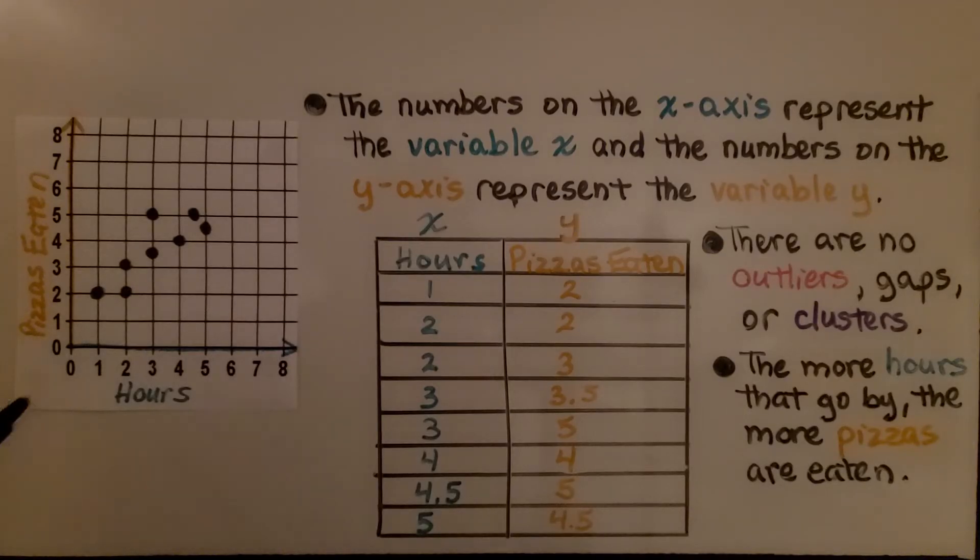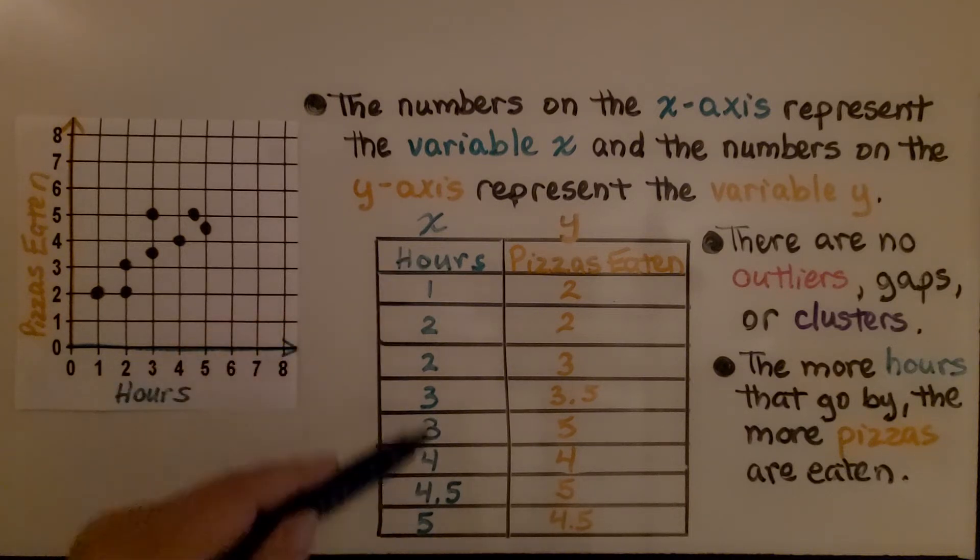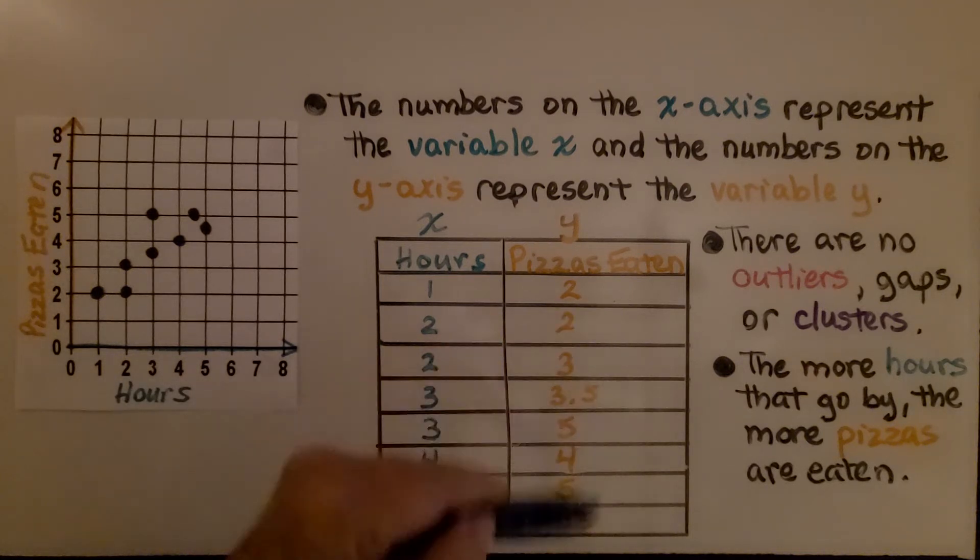Here we have a scatter plot of hours that went by and the number of pizzas that were eaten. The numbers on the x-axis represent the variable x on the table, and the numbers on the y-axis represent the variable y on the table.